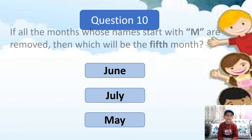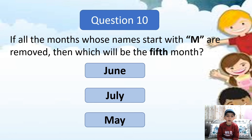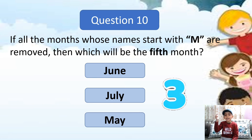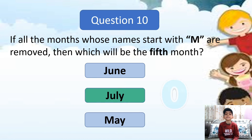Question 10: If all the months whose name start with M are removed, then which will be the 5th month? Can you think? Yes, the answer is July.